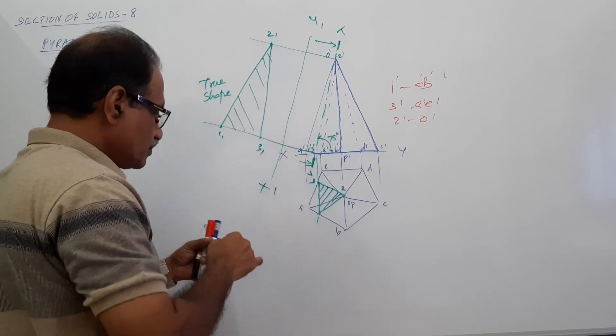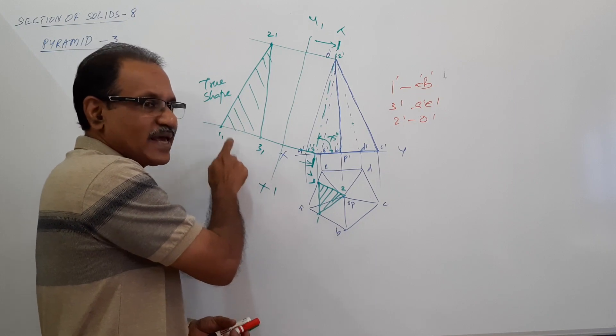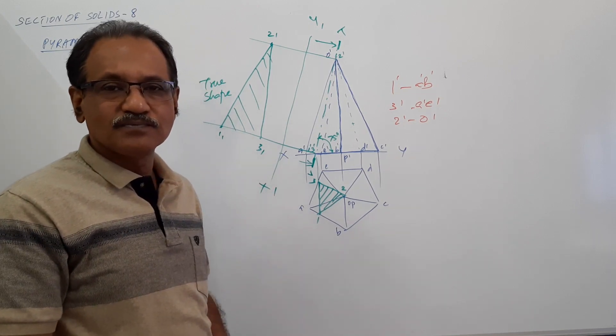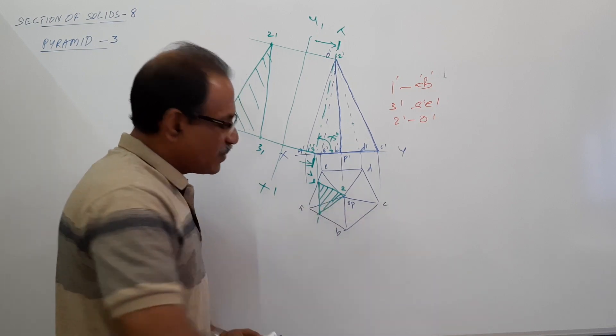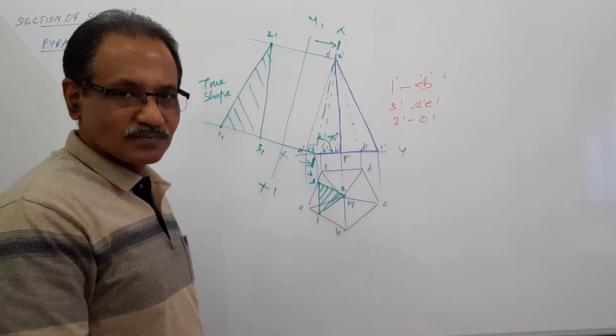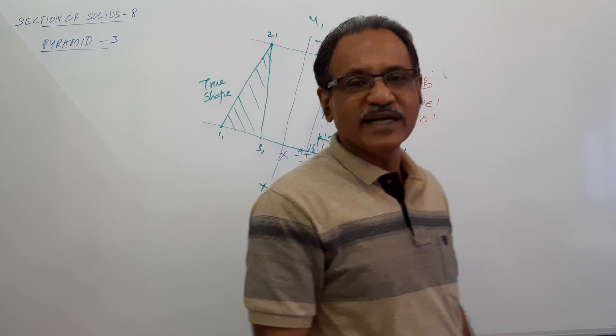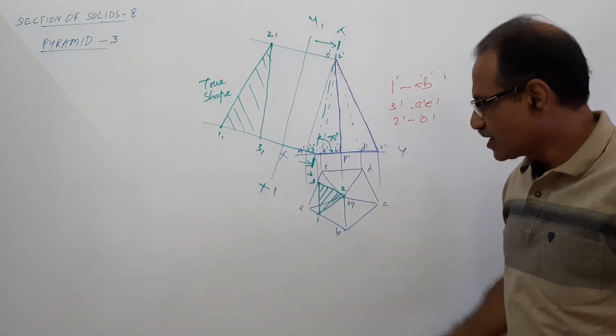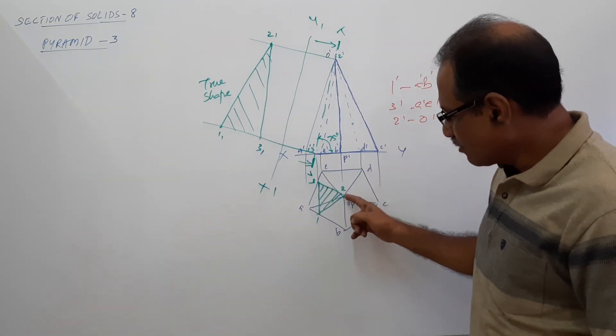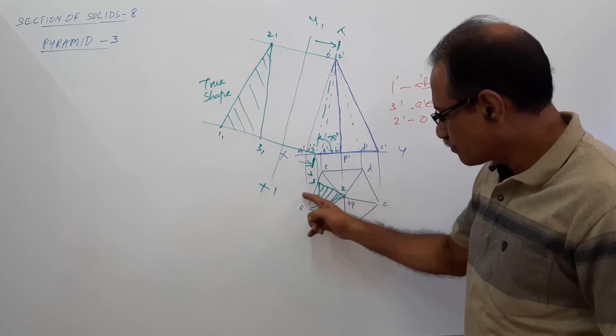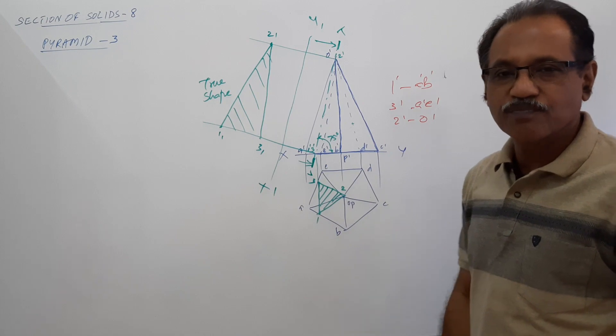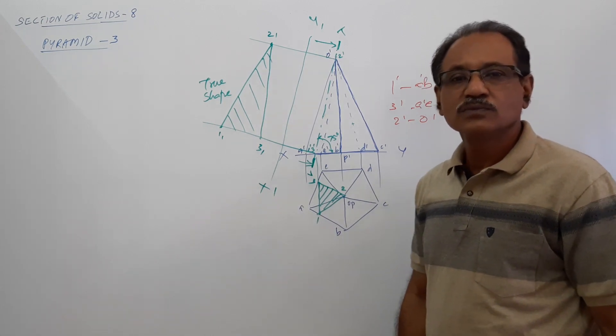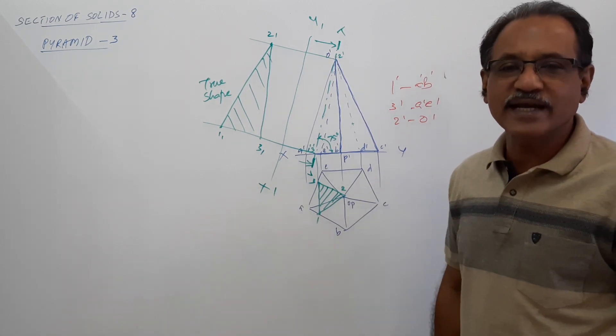Now, will this be an isosceles triangle? Will this 1, 2, 3 be an isosceles triangle? You can think, what is the possibility? If this is an isosceles triangle, if you draw a horizontal line through this OP, this distance and this distance are to be same. You think of it, whether it can be an isosceles triangle.